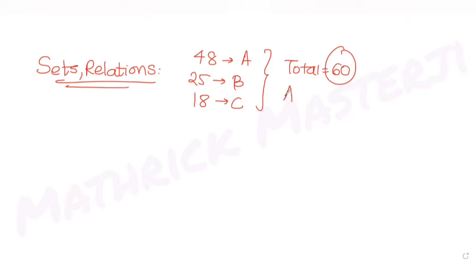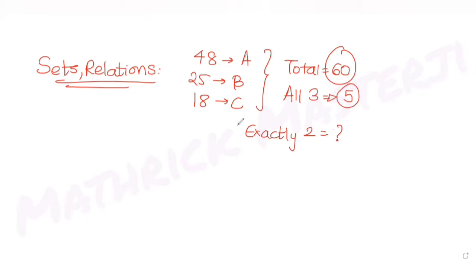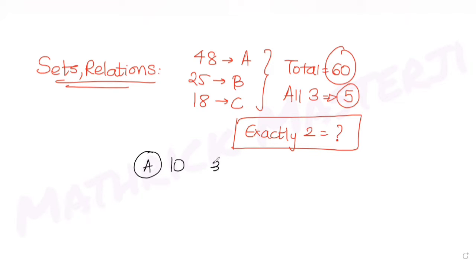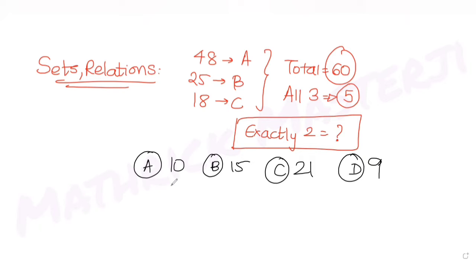Only five men got medals in all three events. So we have been given that the number of people who received medals in all three events is five. The question asks how many of the men received medals in exactly two of the three events. The answer choices given are 10, 15, 21, and 9.